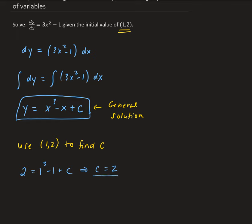So therefore, our function y is going to be equal to x cubed minus x plus 2. This is what's called the particular solution.